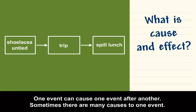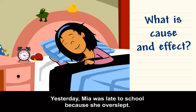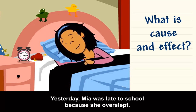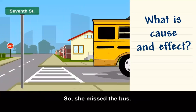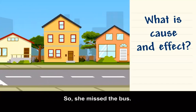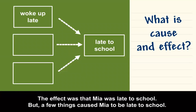Sometimes there are many causes to one event. Yesterday, Mia was late to school because she overslept. Then she couldn't find her backpack, so she missed the bus. The effect was that Mia was late to school, but a few things caused Mia to be late.